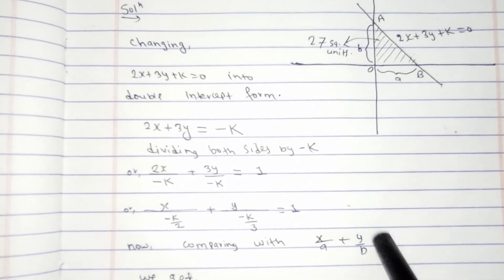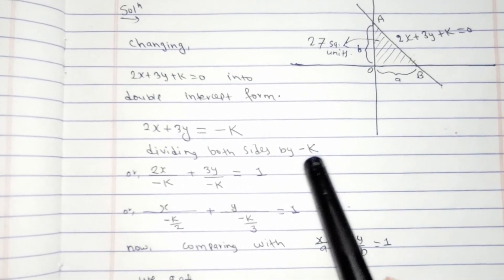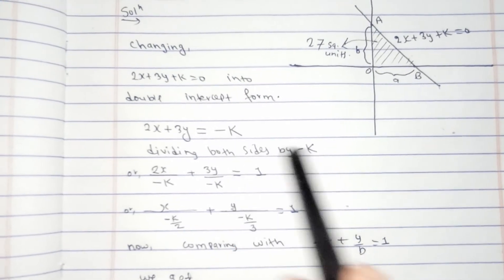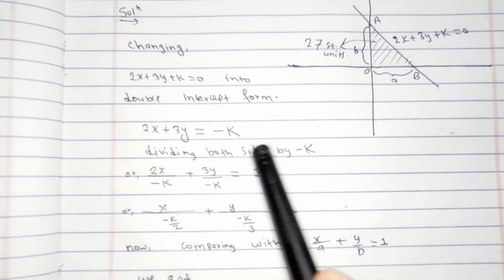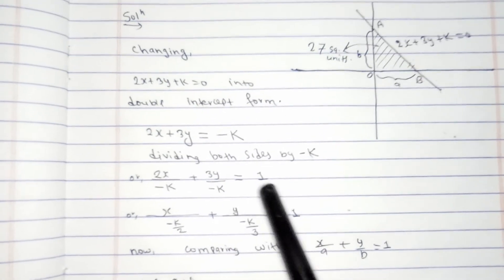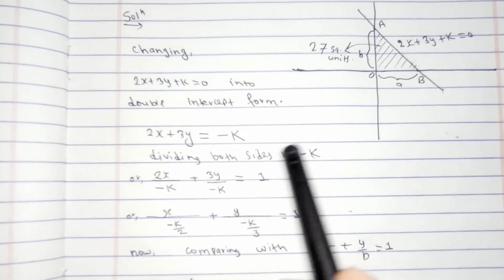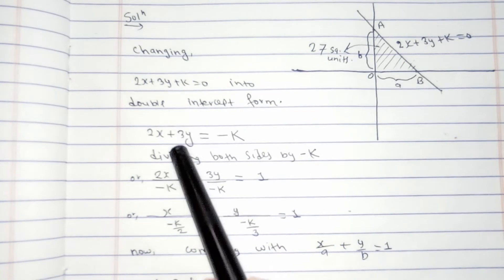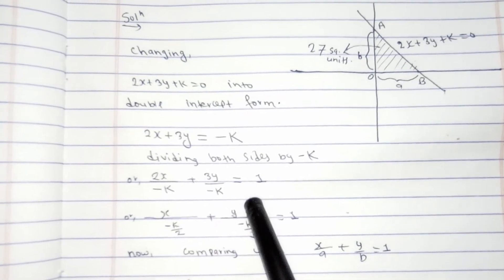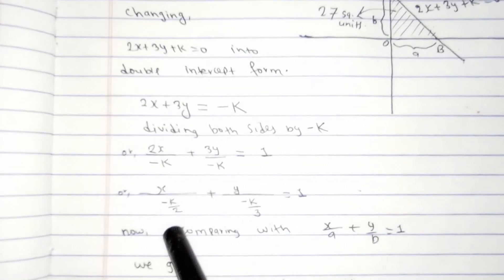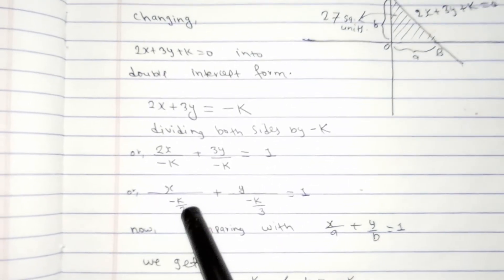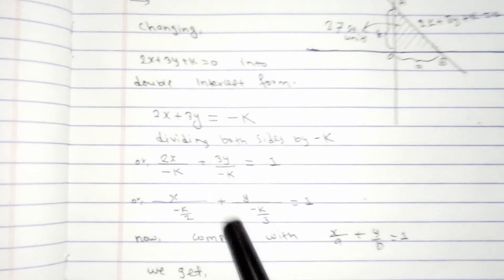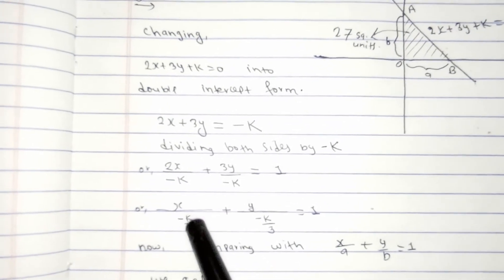The double intercept form is x/a + y/b = 1, so we need to make 1 on the right side. We divide by minus k: minus k divided by minus k gives 1. The remaining terms can be rewritten in intercept form after taking the reciprocal, so it is written in this form to make it easy to compare.